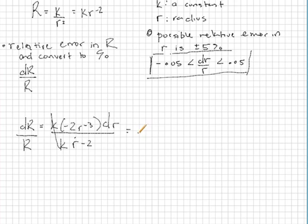If we simplify that, we will get negative 2 r to the negative 1 dr, which is equal to 2 dr over R. Now we're starting to see something that almost looks like this.